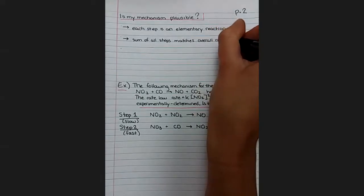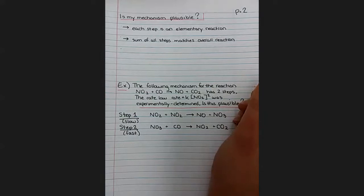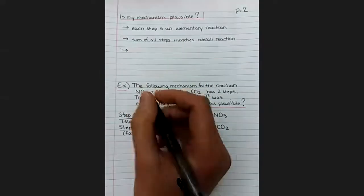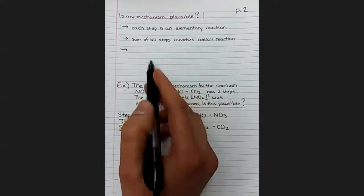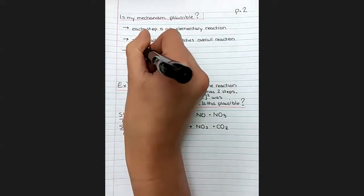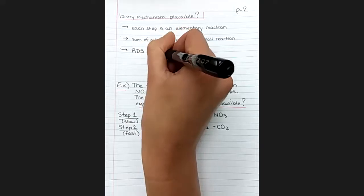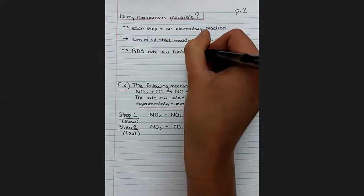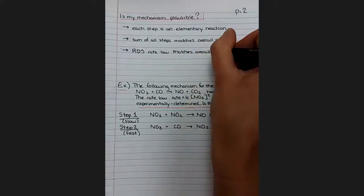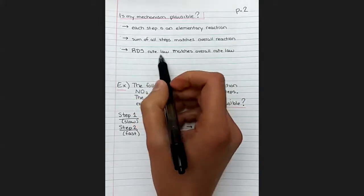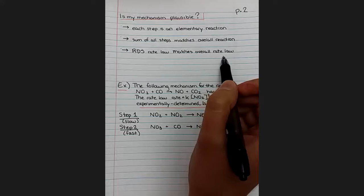Because what we're saying when we propose a mechanism is that the mechanism is just a path, a way to get from the reactants to the products. And if that is true, then if we add all of the steps together, we should end up with something that matches the overall reaction. The third requirement for the mechanism to be plausible is by looking at the rate determining step. The rate law of the rate determining step needs to match the overall rate law, which is experimentally determined. So if you propose a mechanism, you need to prove that the rate determining step matches the experimentally determined rate law.